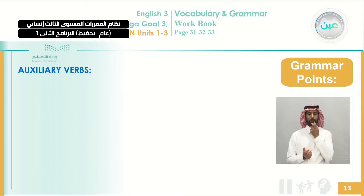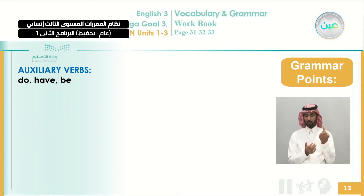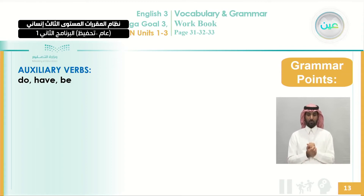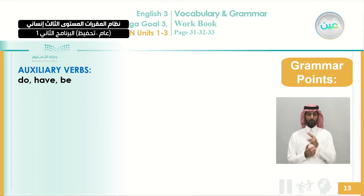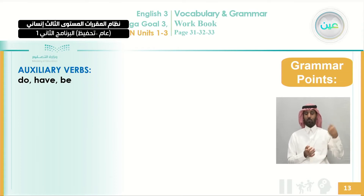Now we're moving to the grammar section with four exercises from C to F. First, a quick revision of grammar points. The auxiliary verbs from unit one are do, have, and be. These are the most common and sometimes confusing because they can be used as main verbs or auxiliary verbs. Do can appear as do, does, or did; have as have, has, or had; and be as am, is, are, was, were, or been.